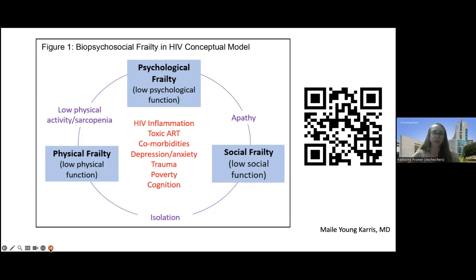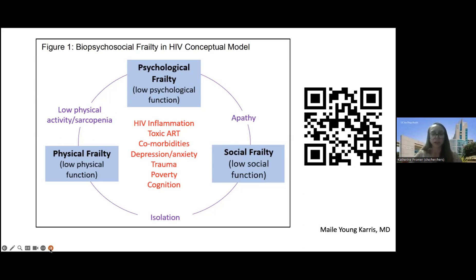Frailty has many contributors: inflammation from HIV infection, historical toxic antiretroviral therapy, comorbidities, depression, anxiety, trauma, stigma, poverty, and cognition. It can also manifest as and contribute to isolation, apathy, and physical sarcopenia — all of which kind of feed into each other and contribute to frailty.